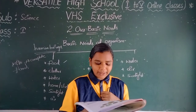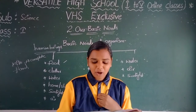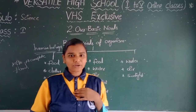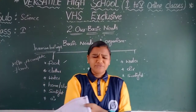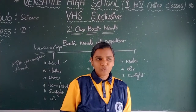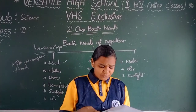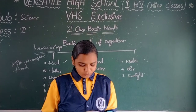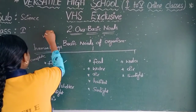We wear cotton clothes in summer. Cotton clothes keep us cool. We get cotton from plants. We wear woolen clothes in winter. Woolen clothes keep us warm. Sweaters worn in winter are made of wool. We get wool from sheep.